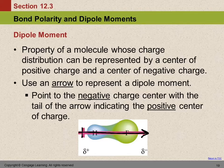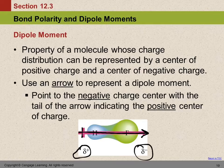Another way to represent this is with Greek letters — lowercase delta: delta plus and delta minus. That indicates partial charge. It's not an ion; it's not a plus one and a minus one. It's a partial charge — just a little lopsided.